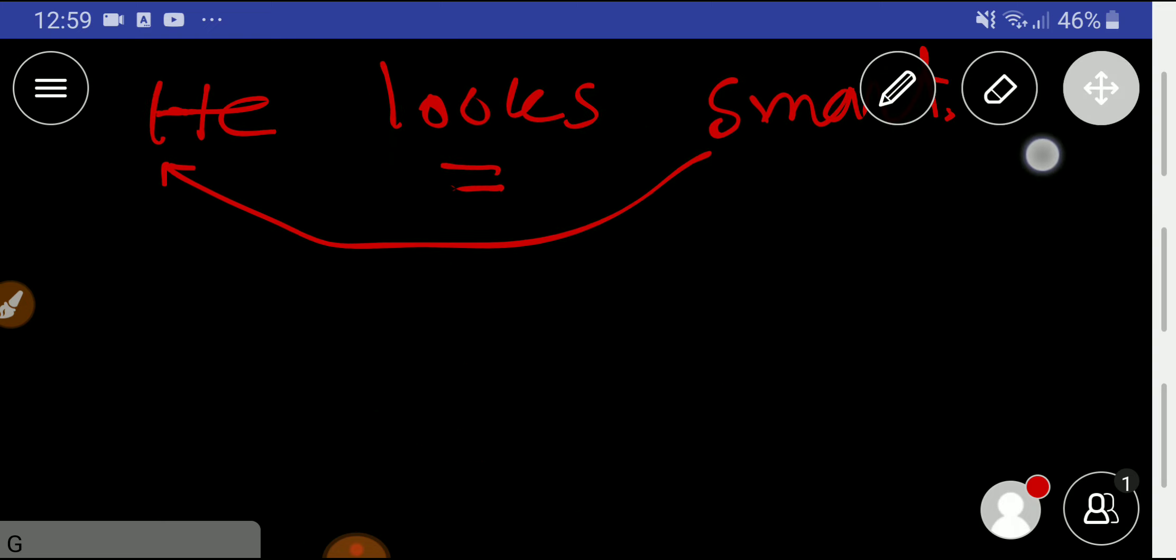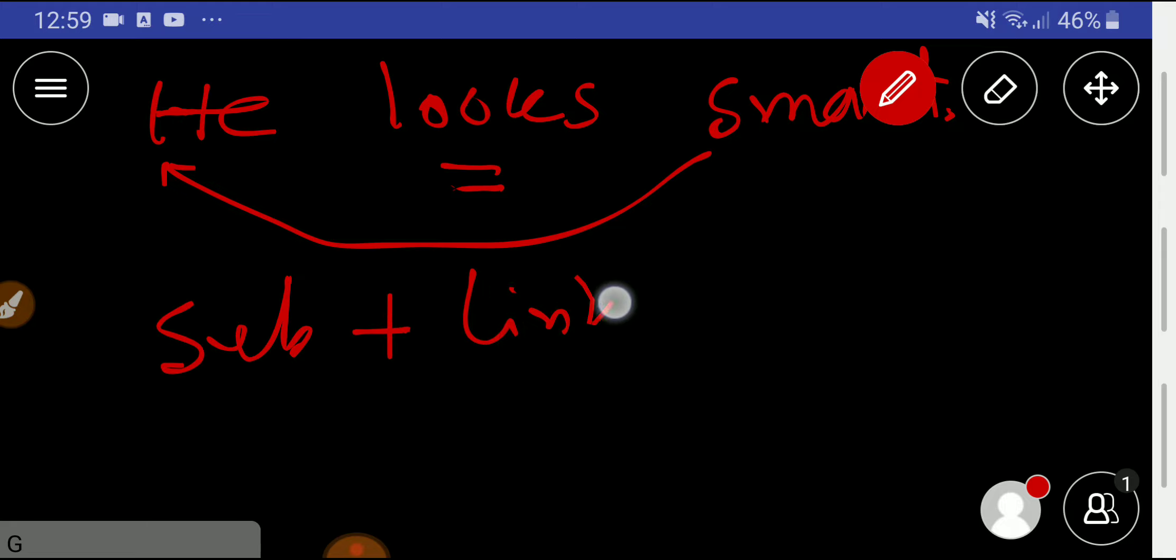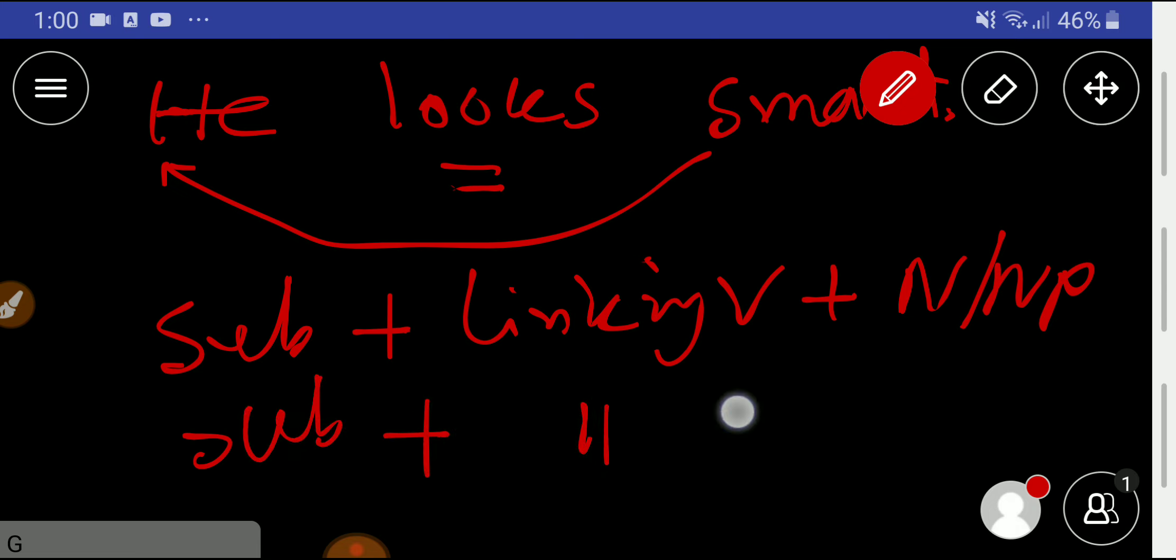With linking verbs, you will get two types of sentence structure: Subject plus Linking Verb plus Noun or Noun Phrase, like 'He is a student'. Then Subject plus Linking Verb plus Adjective, where the adjective must describe the subject. Linking verbs never express any action.